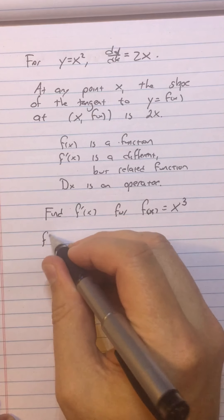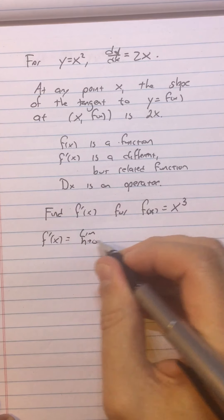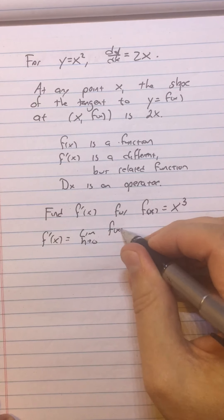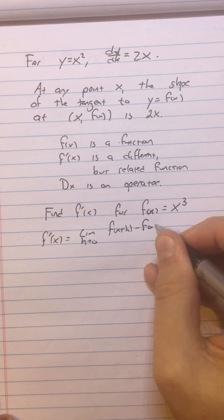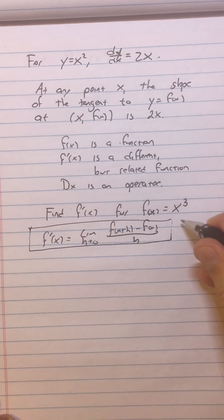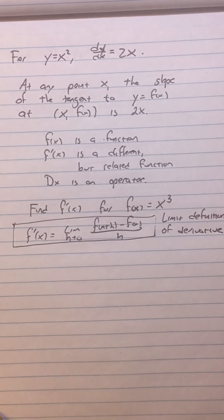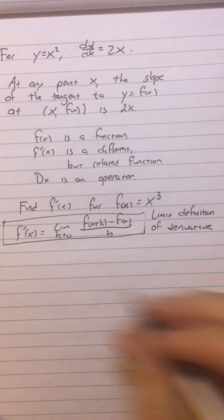You're going to say, every time the f prime of x equals the limit as h approaches 0 of f of x plus h minus f of x over h, this right here is the definition of the derivative which you must memorize. The limit definition of the derivative which you must know and understand.